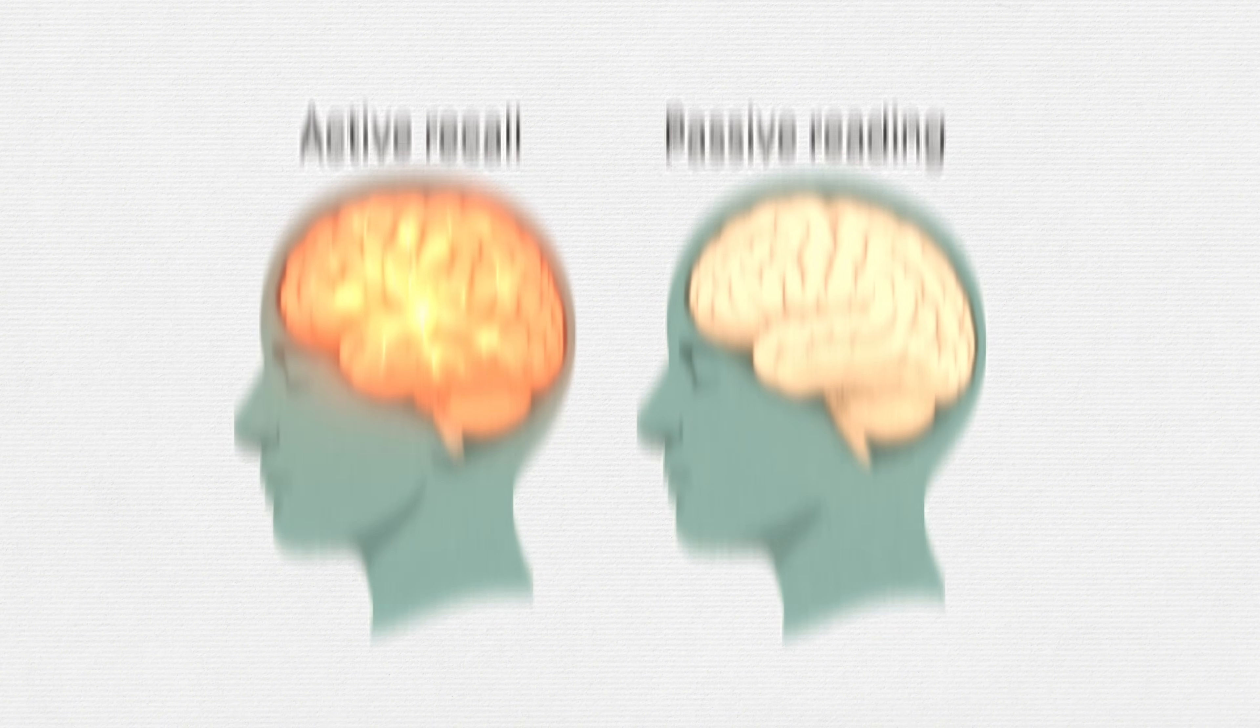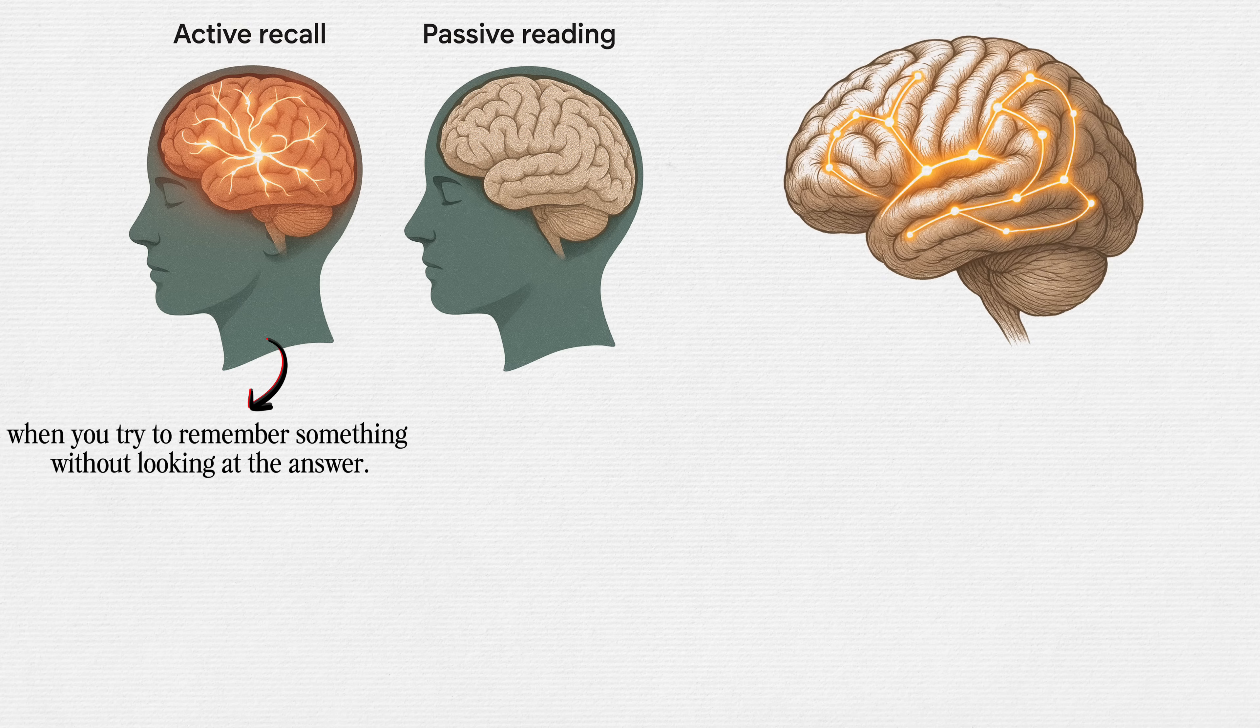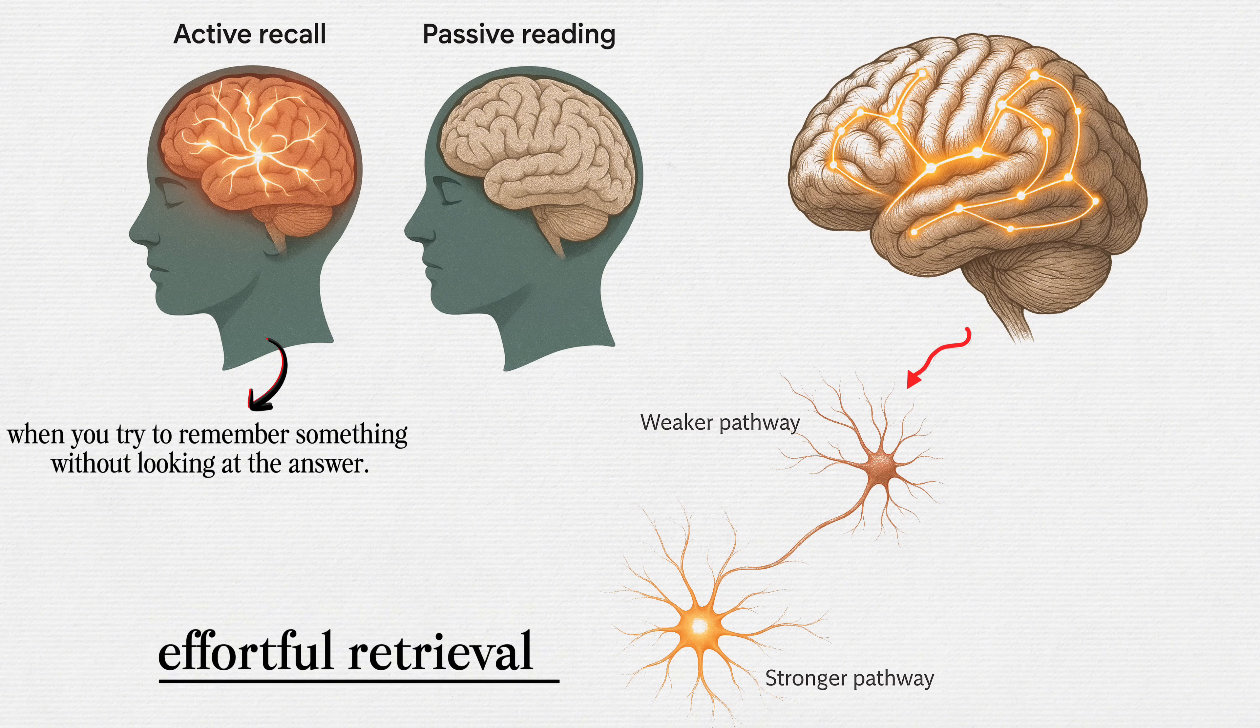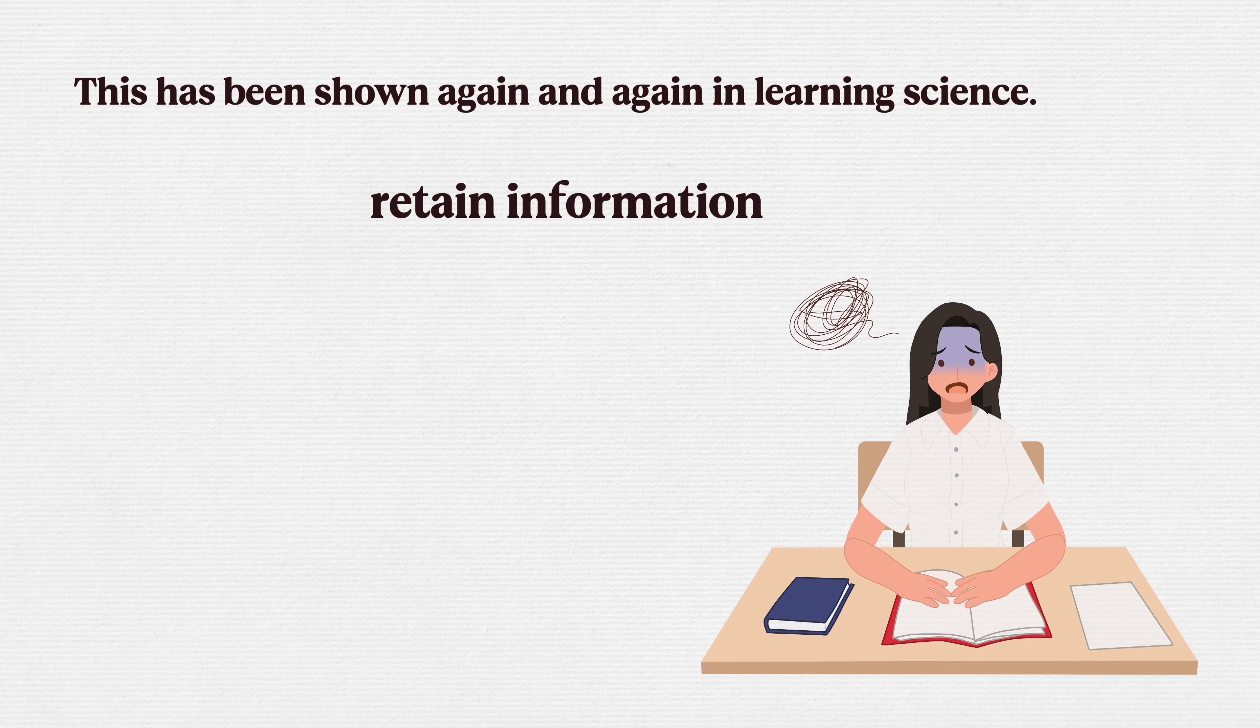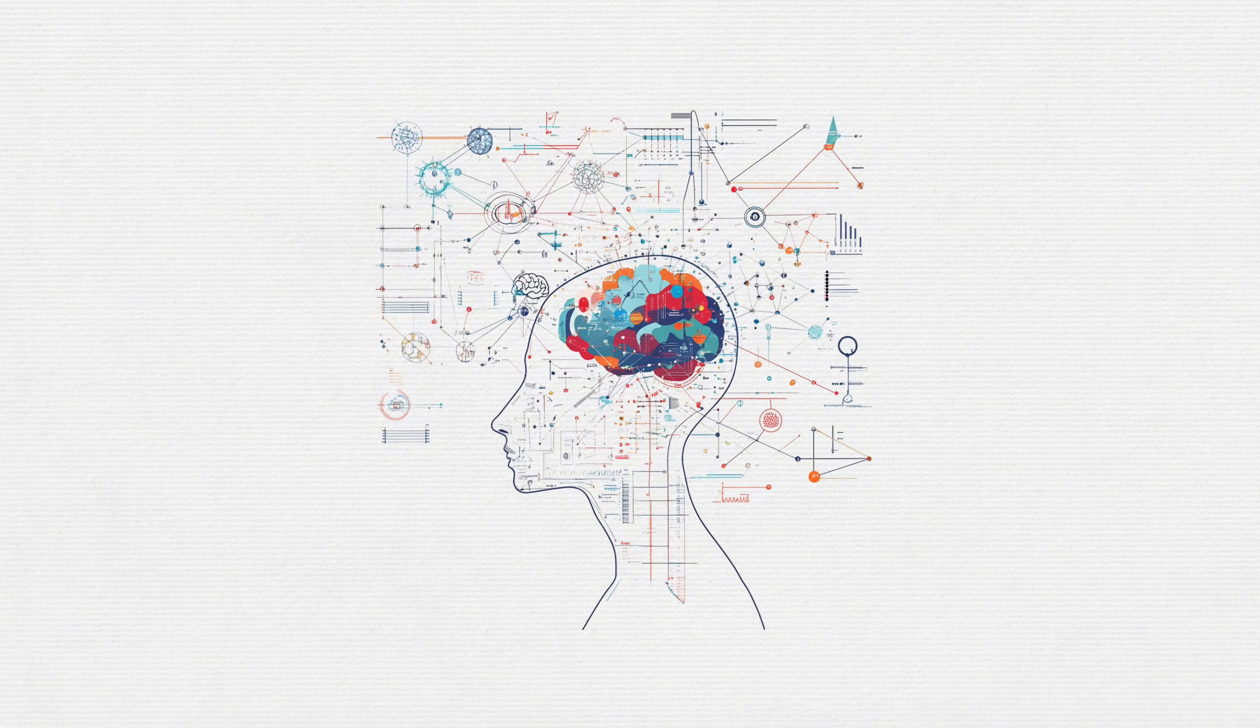Now contrast that with active recall. When you try to remember something without looking at the answer, that mental effort actually strengthens the neural pathway. It's called effortful retrieval. And it's one of the most powerful drivers of memory consolidation. This has been shown again and again in learning science. If you want to actually retain information, you have to struggle with it. You have to pull it out of your brain, and not just once, but at spaced intervals. That's how memory is built.